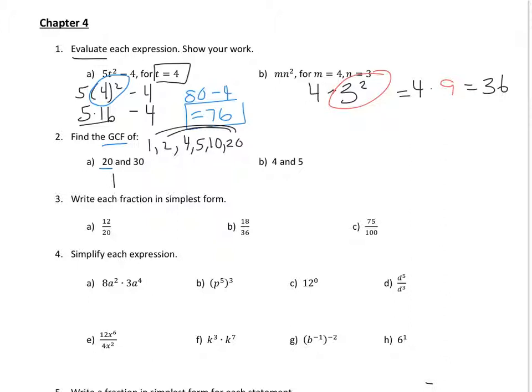Factor out 30. 1, 30. 2, 15. 3 goes with 10. 5 goes with 6. So now that you have all of the factors, the greatest common factor is the highest number that both of them have in common. So 10 is the highest number they both have in common. So that's the GCF.